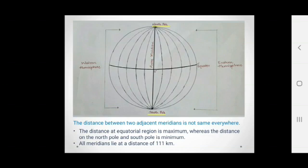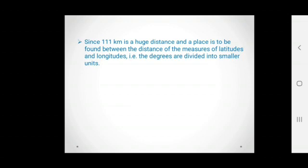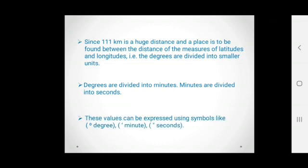All meridians lie at a distance of 111 km. Since 111 km is a huge distance and a place is to be found between the distance of the measures of latitudes and longitudes, the degrees are divided into smaller units. Degrees are divided into minutes. Minutes are divided into seconds.